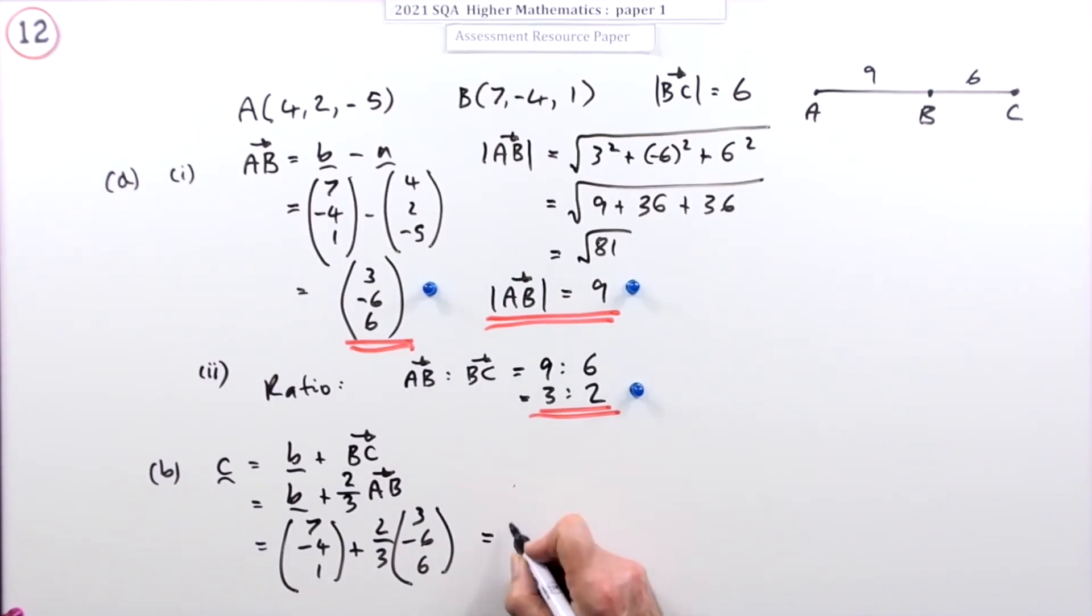Run out of space a bit, so I'll just tidy that up now. So that means your final answer is going to be now 7 plus two-thirds of that is 2 will be a 9. Two-thirds of that is a negative 4, so that's a negative 8. And two-thirds of that is a 4, so that's a 5. That's the position vector of C, which means C is the point 9, negative 8, 5.